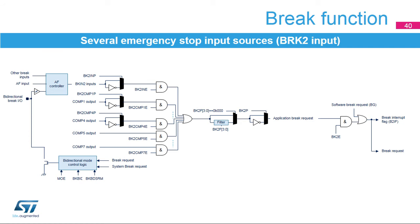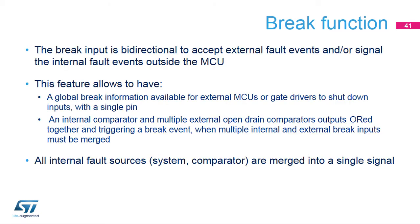Unlike the BRK input, the BRK2 event can be caused neither by a system brake request nor by a software brake request. The STM32G4 implements a bi-directional brake. The brake I/O pad reports board-level failure but can also signal a microcontroller internal failure. Bi-directional mode is available for both brake and brake 2 inputs and requires the I/O to be configured in open-drain mode with active-low polarity. Internal brake sources and multiple external open-drain comparator outputs are ORed together to trigger a unique brake event when multiple brake sources must be merged.